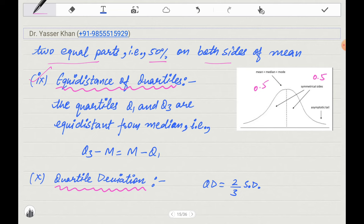Next is equidistance of quartiles. The quartiles are equidistant. What is this formula? Q3 minus median is equal to median minus Q1. Q1 and Q3 are equidistant from the median. Here is Q1, here is Q3. The median is equal distance from Q1 and Q3.